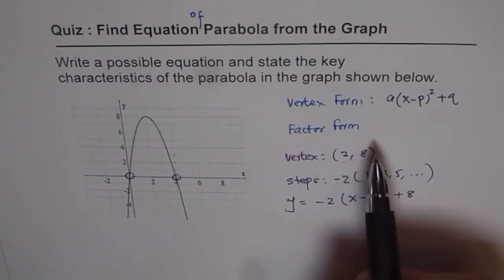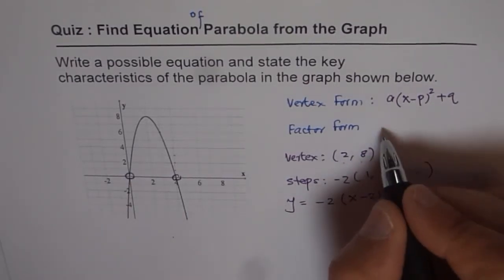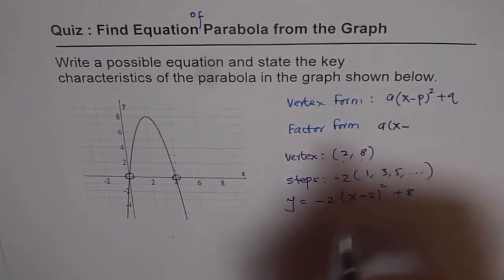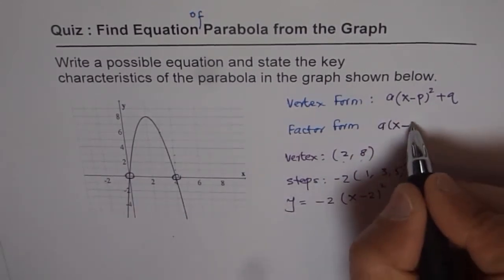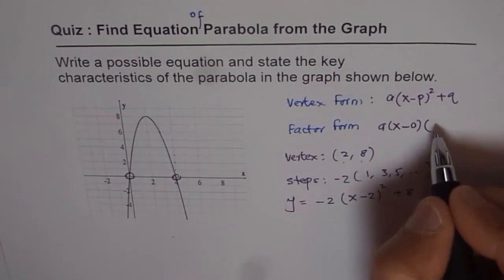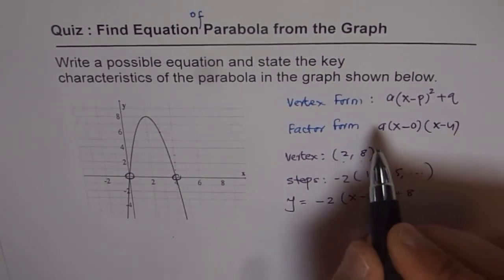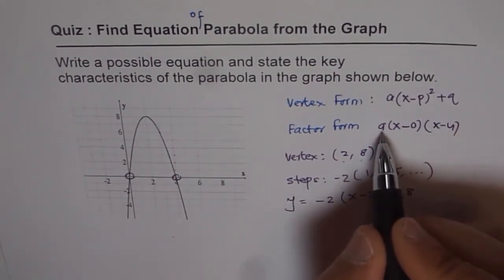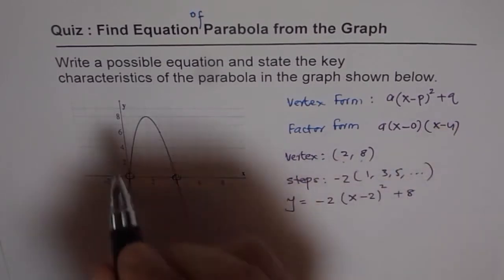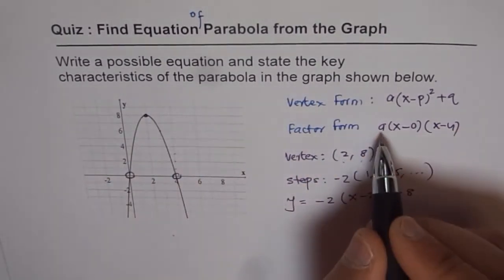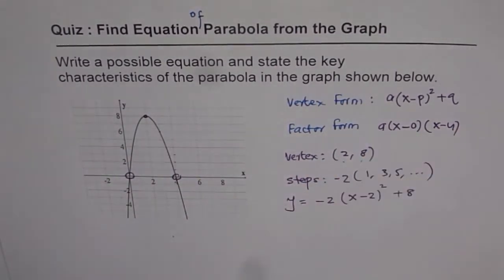If you do factored form, which is a(x - 0)(x - 4), where the intercepts are 0 and 4, you need to find what a is. For that, you need some more points. The vertex could be a good point to plug in to get the value of a. That will require some calculations, so the vertex form is probably the best way of solving these kinds of questions.